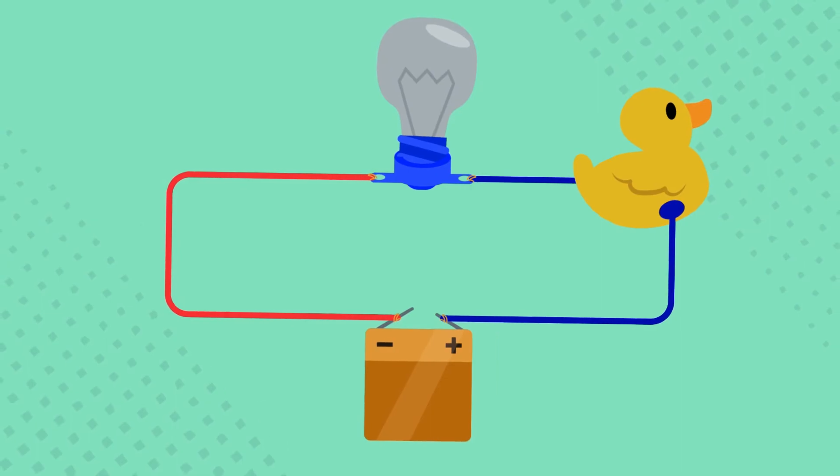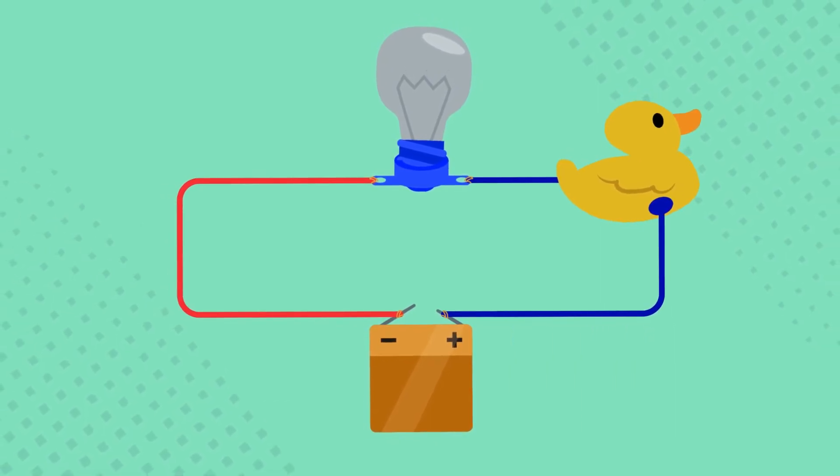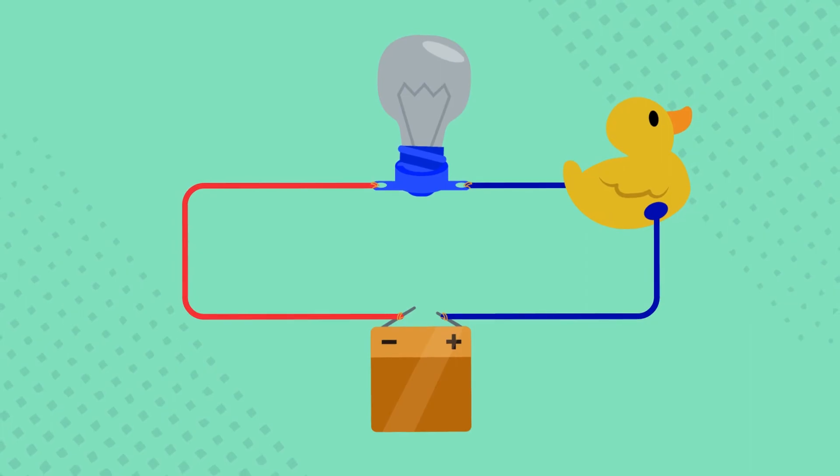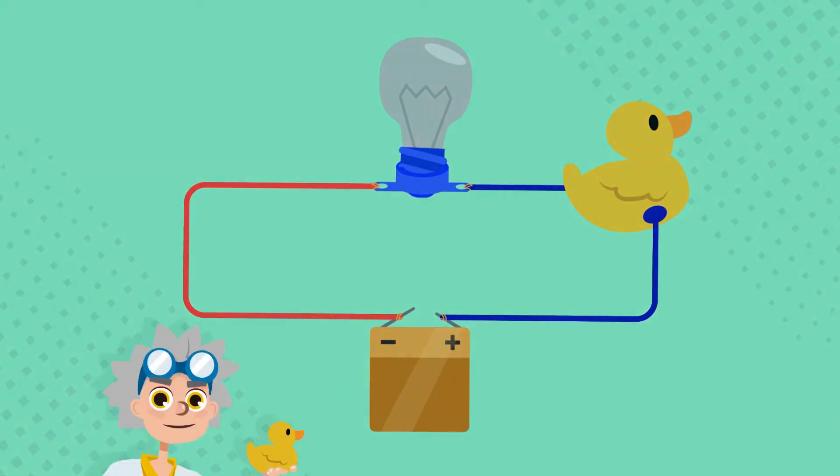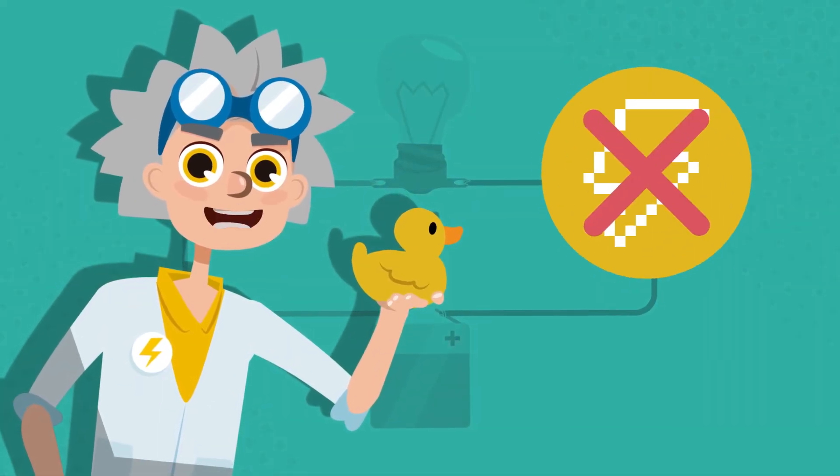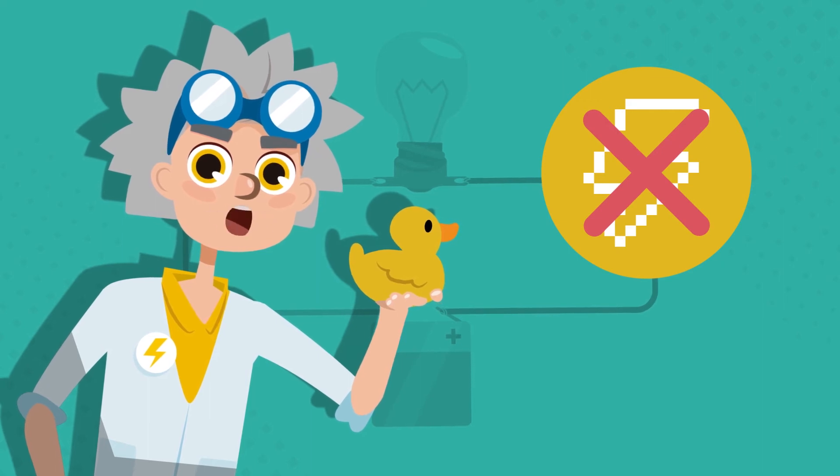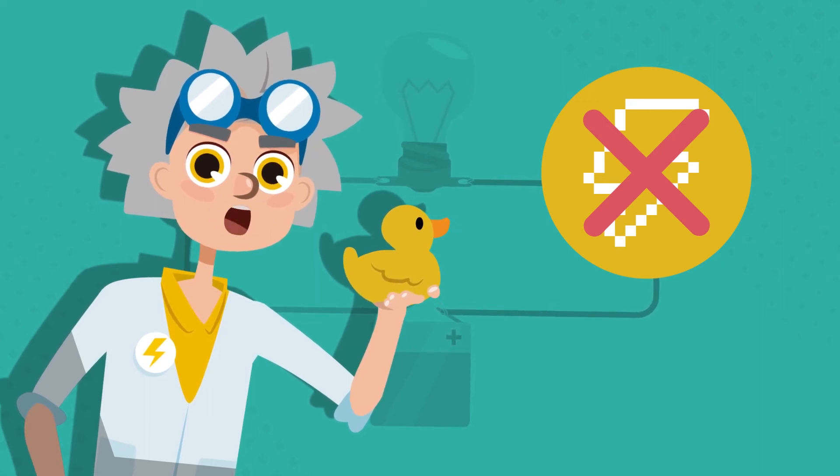Ooh! The light bulb didn't turn on! The little ducky is made of rubber. And rubber is an insulating material. Insulating materials do not allow electric charges to flow through them. That's why the light bulb didn't light up!